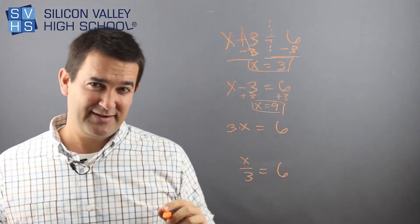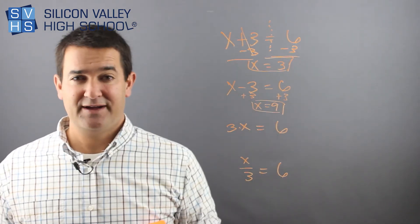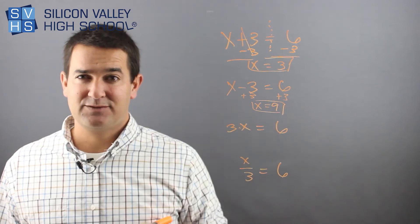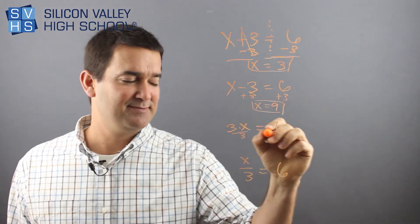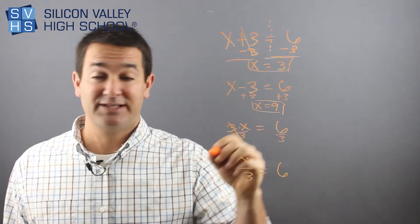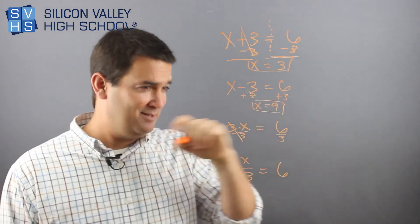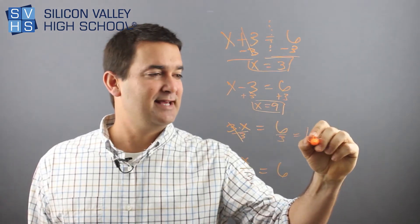A little weirder with multiplying and dividing. This is three times x. What's the opposite of times? You're going to divide both sides by three. X is alone, which was the goal. Six divided by three is x equals two.